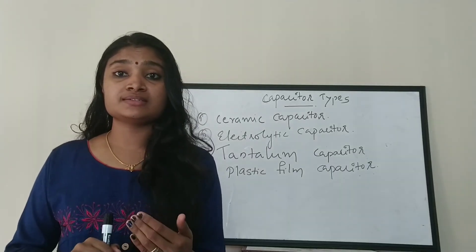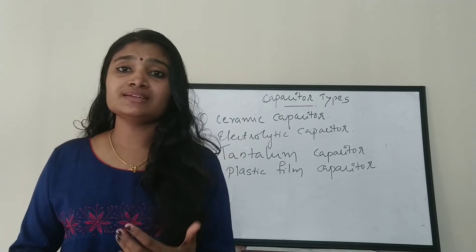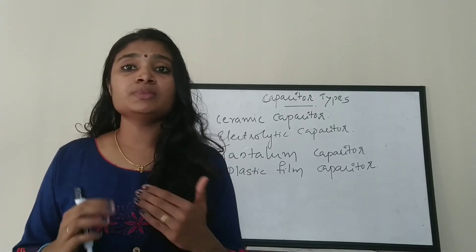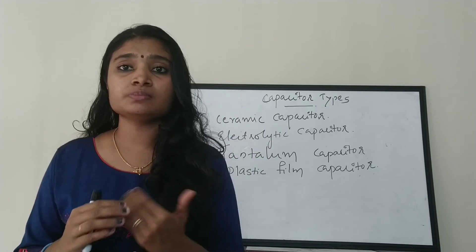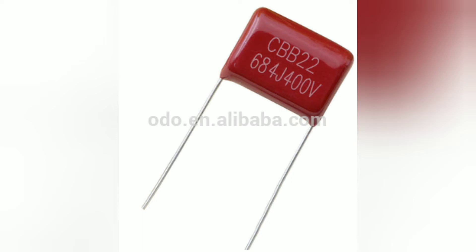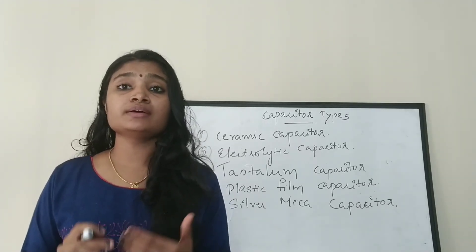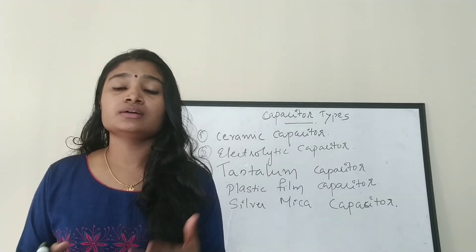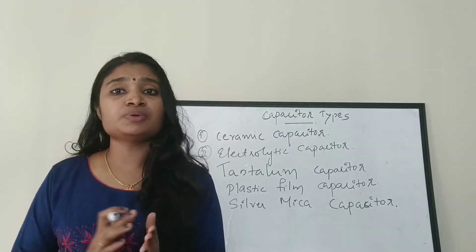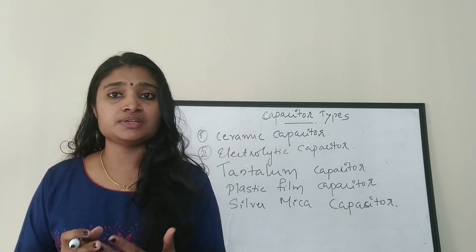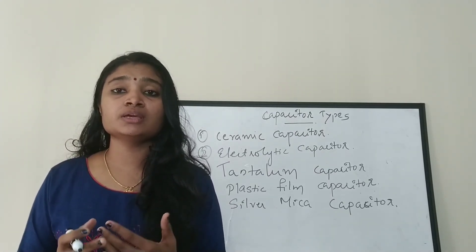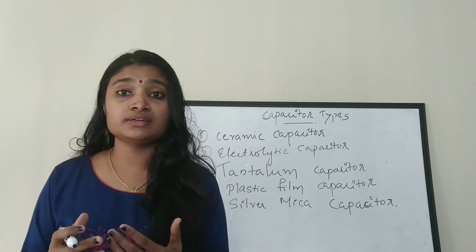The next type is the plastic film capacitor. From the name it is clear that it uses a plastic insulator or dielectric. Two metal electrodes or metal films are separated by a plastic film to form this capacitor. After that is the silver mica capacitor, which uses silver as the metal and mica as the dielectric, with two silver metals separated by a mica insulator.